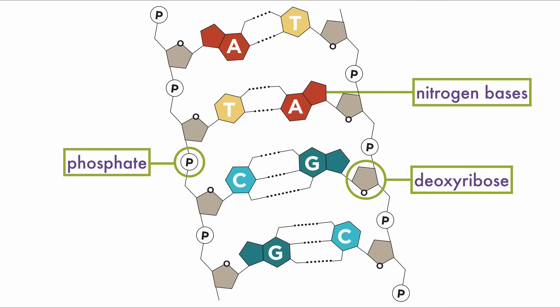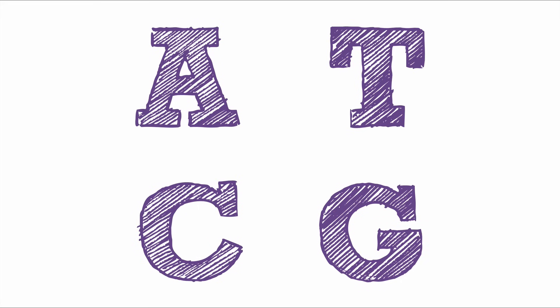To help me remember which bases link together, I think of writing the letters. A and T both use straight lines. C and G use curved lines.